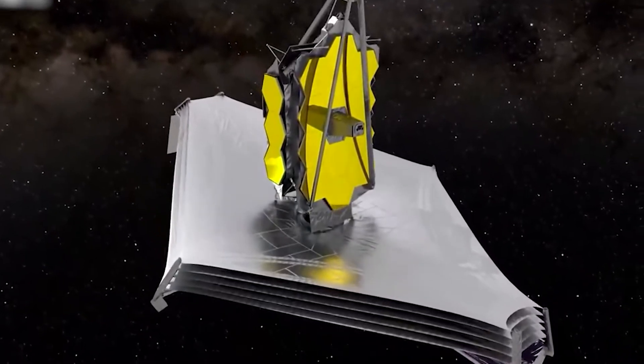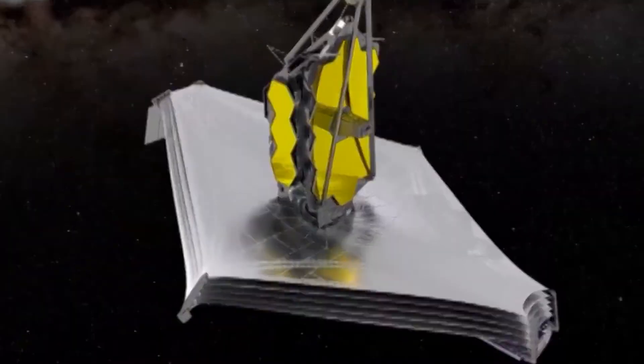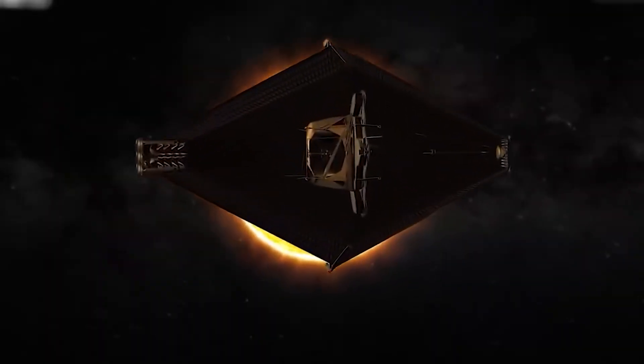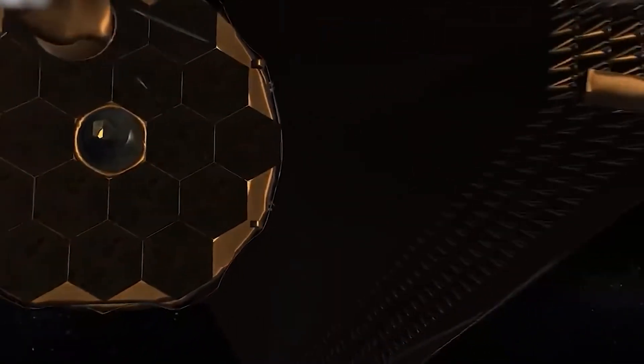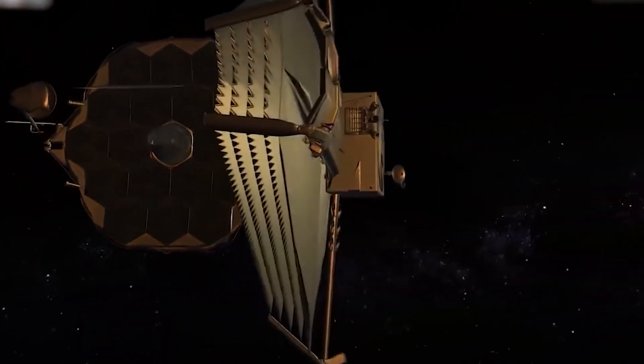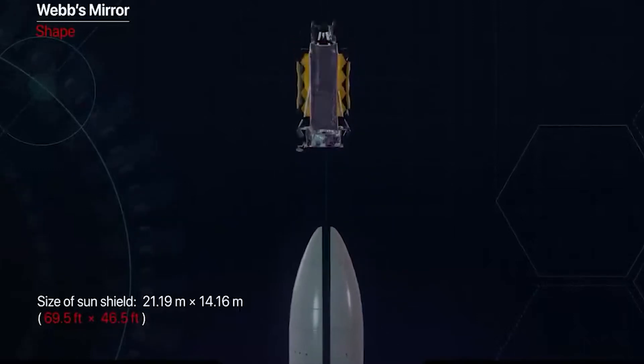Due to the fact that JWST will operate so far away from Earth, if any problems arise, astronauts will not be able to assist with the problem. There are a few reasons why it will be this far in advance. It will be located in a place where the gravity of the sun and the Earth work together to keep the satellite in place, in addition to being far enough away from the reflected radiation of the Earth to help keep it cool.